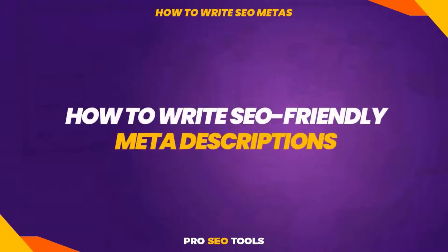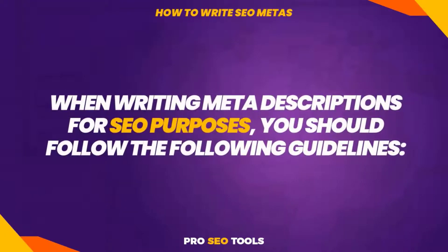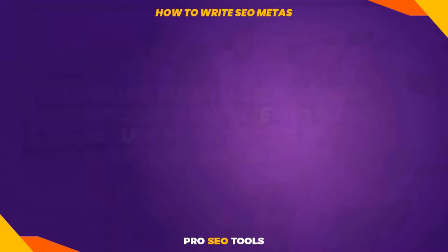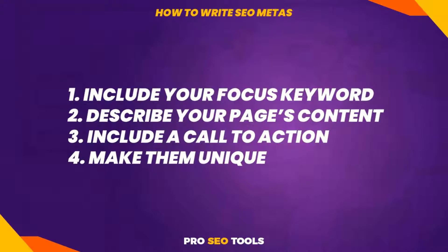How to write SEO-friendly meta descriptions. When writing meta descriptions for SEO purposes, you should follow these guidelines: include your focus keyword, describe your page's content, include a call to action, and make them unique. However, depending on the niche in which you operate and the purpose of your site, you should attempt to adopt as many of these guidelines as feasible to increase your search traffic, clicks, and ranks.